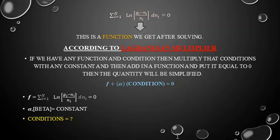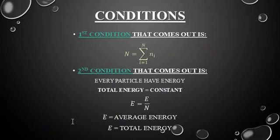According to Lagrangian multipliers, if we have a function and a constraint condition, we multiply that condition by a constant and add it to the function, then set it equal to zero. We have two conditions: first, total particle number N = Σnᵢ; second, total energy E = Σεᵢnᵢ (each particle has energy εᵢ and the total is fixed).